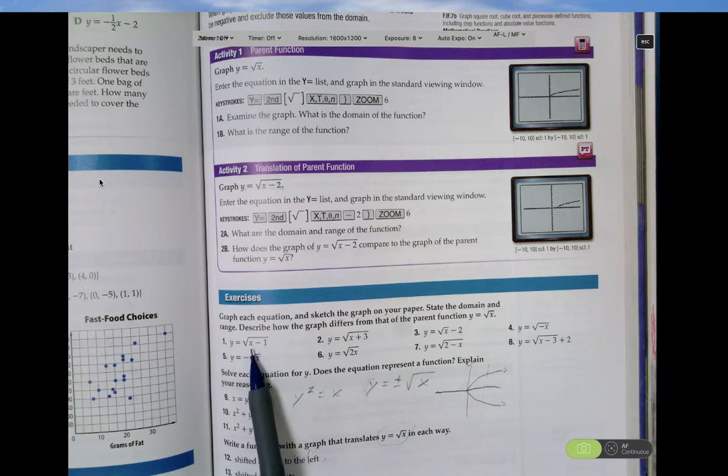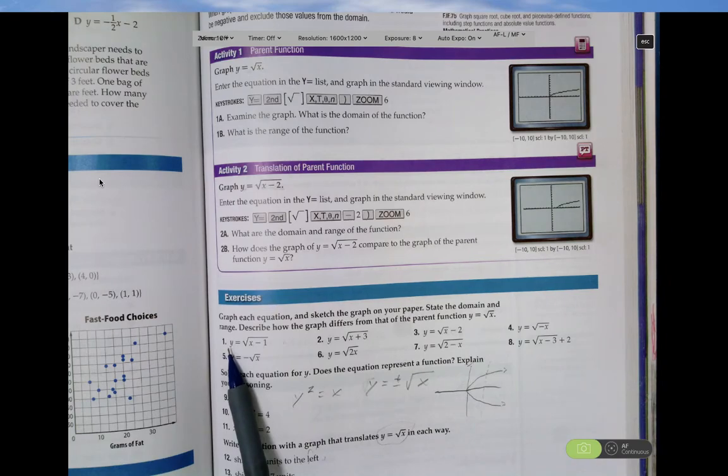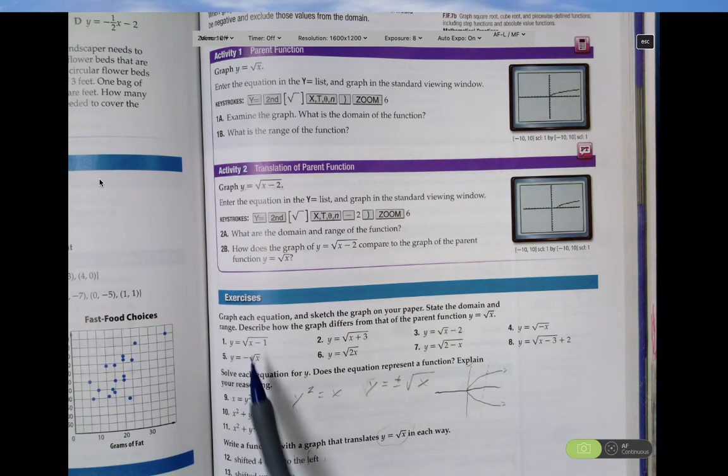The domain would be x is greater than or equal to 1 because I could put 1 in and this still works because it doesn't make it negative. 1 minus 1 is 0. I could put anything greater than 1. So the domain is x greater than or equal to 1. The range is y, there's no vertical shift here. So y is greater than or equal to 0. And then sketch it.